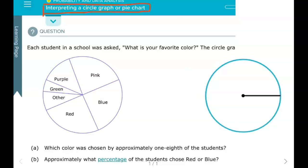Alright mathematicians, here we are interpreting a circle graph or a pie chart. It says each student in the school was asked what is your favorite color, and then the circle graph represents that data.